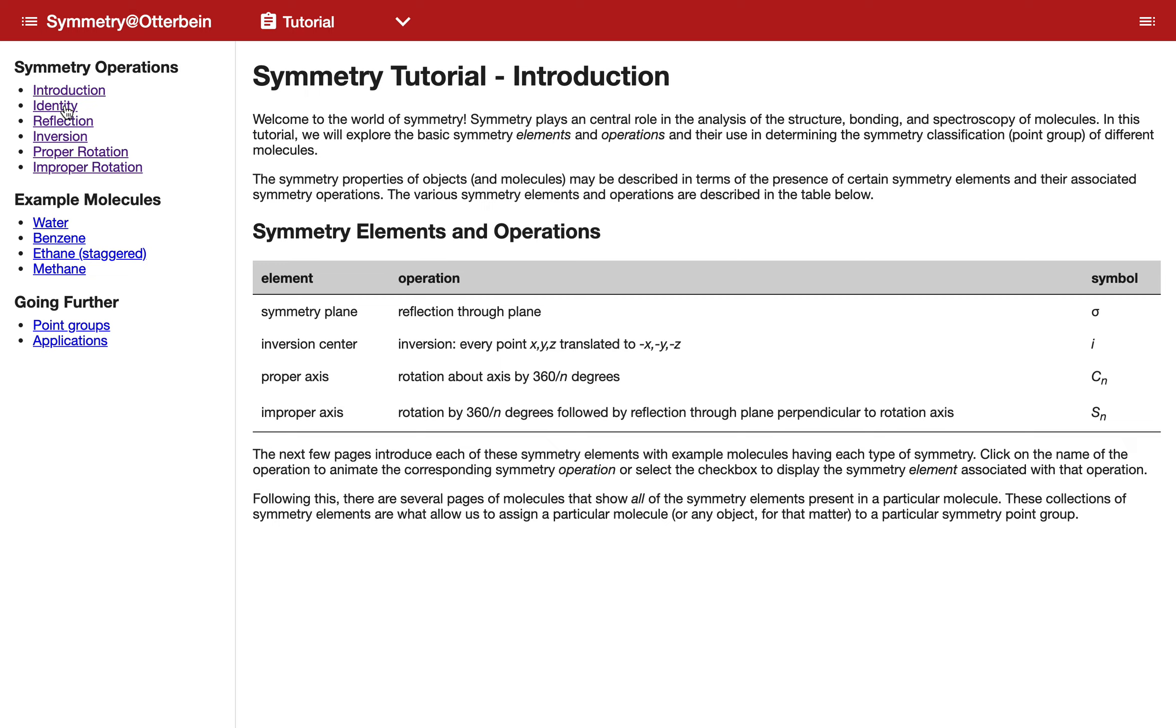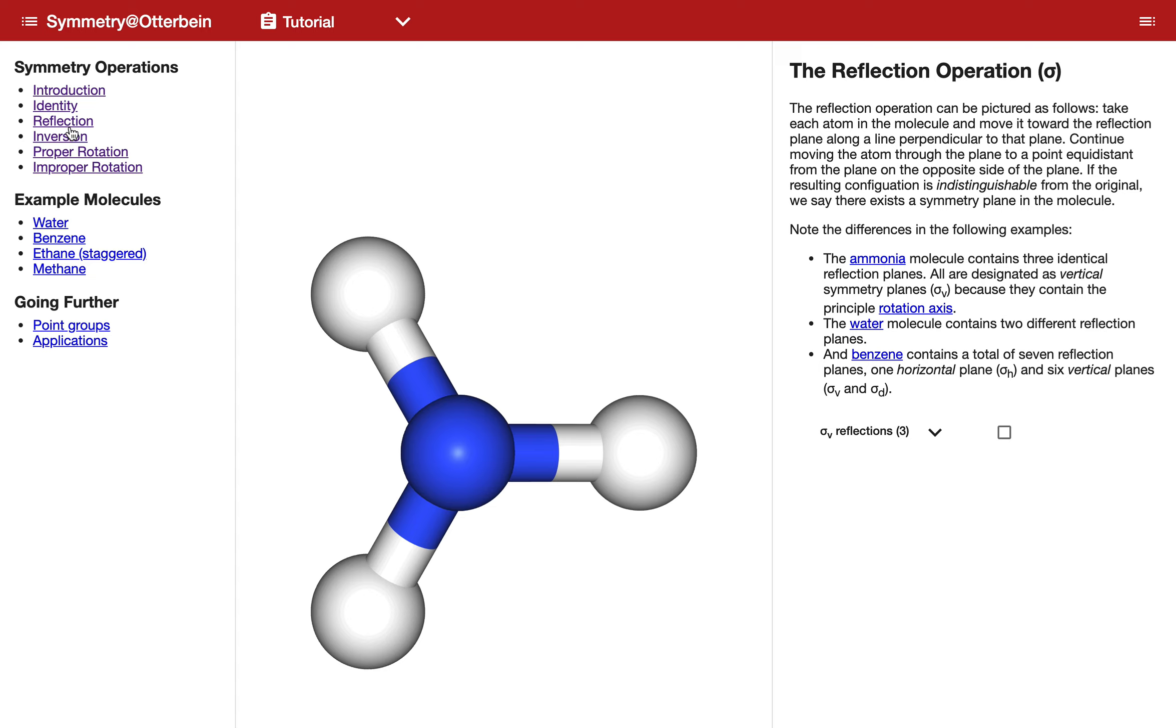The identity link is particularly trivial and uninteresting, so we're going to go directly to the reflection link and see what sorts of information you might be given there. Now you'll notice it opens up a page. It tells you a little bit about the operation and shows you a sample molecule, in this case ammonia.